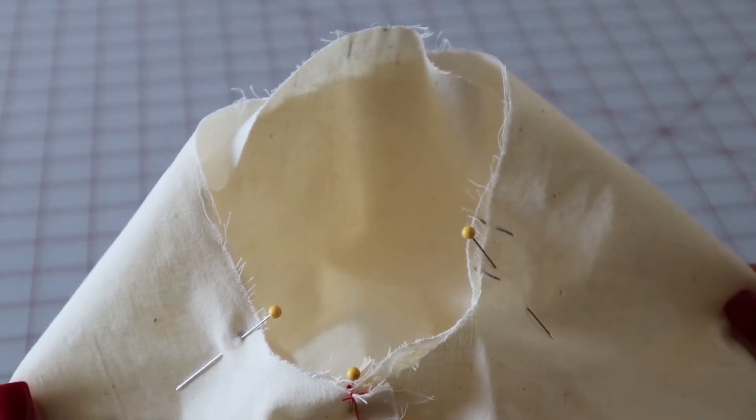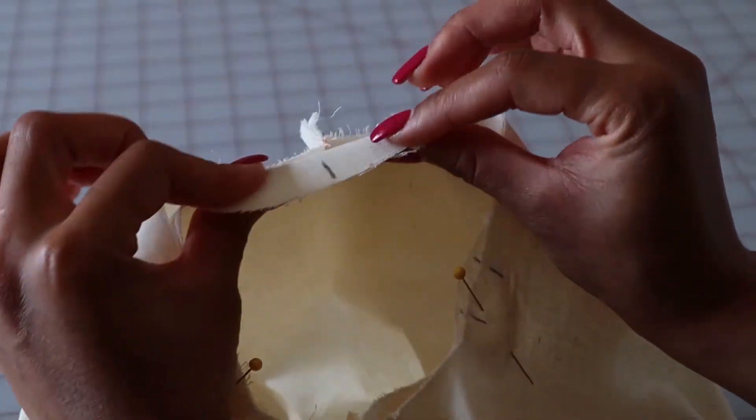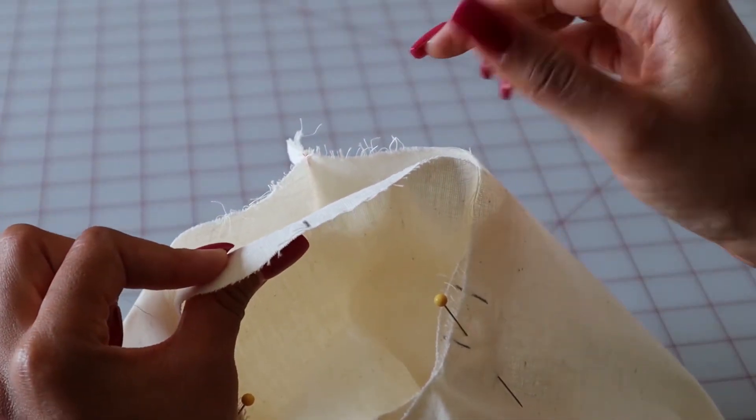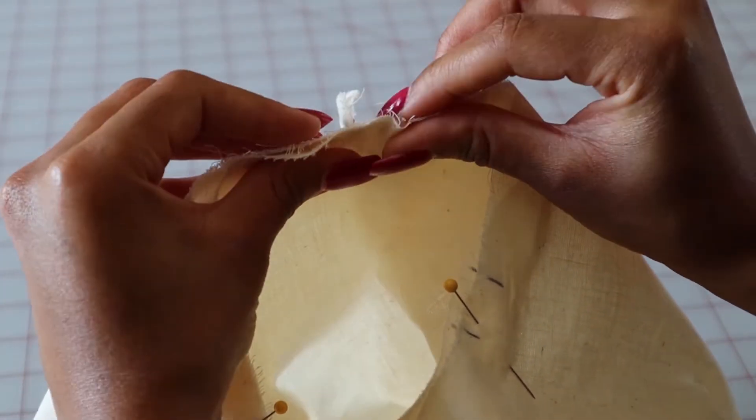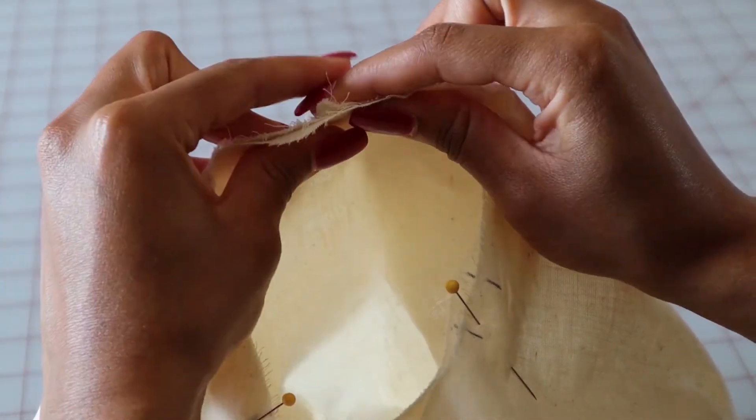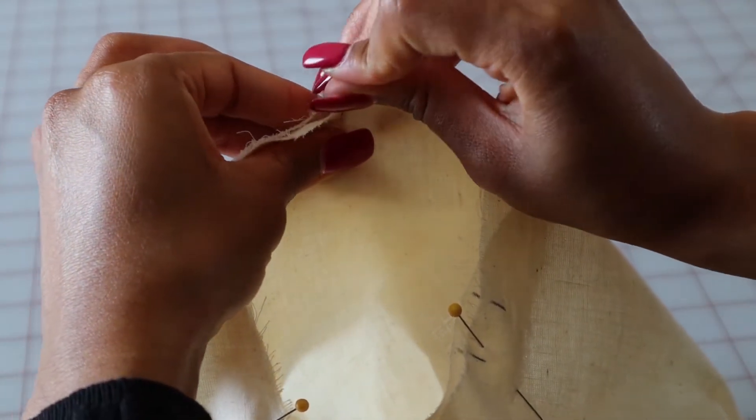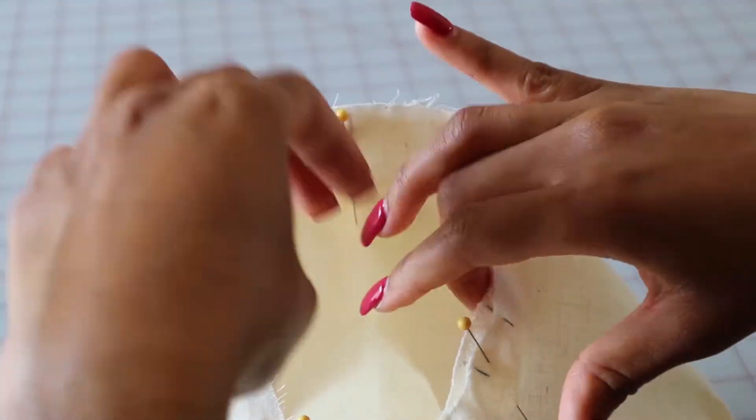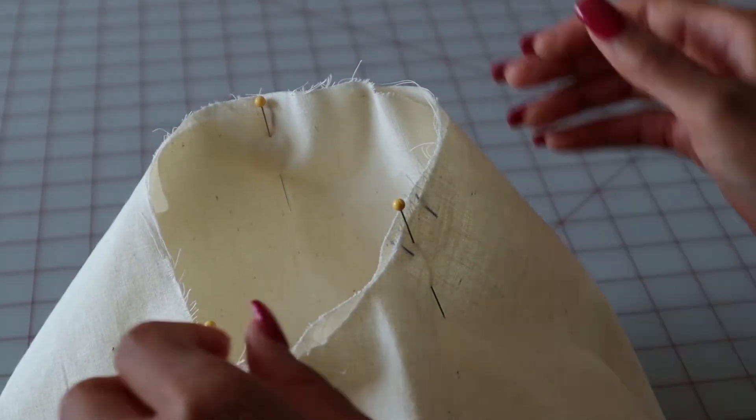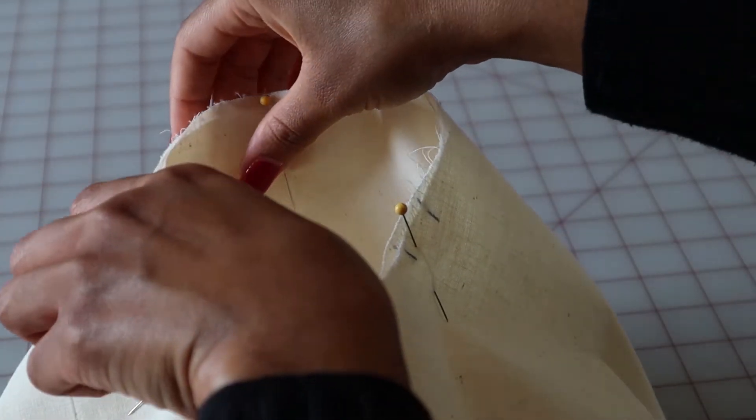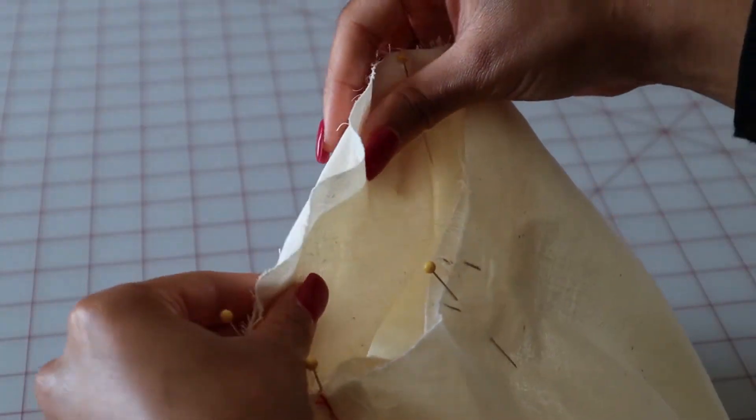Next you're going to take your single notch at the top of your sleeve and match it with the shoulder seam of the bodice. Push the seam allowance to one side and pin it in place. So now we will begin to work on the ease. The ease is very important because it allows for the comfortable movement of your arms when wearing a garment with sleeves. So every set-in sleeve has ease.